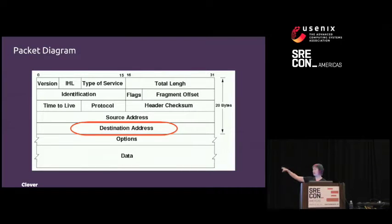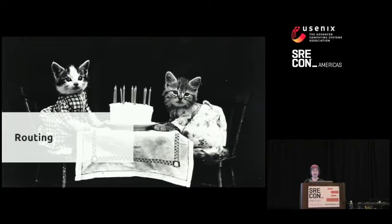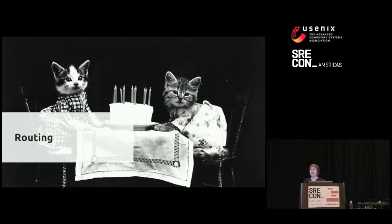So now your switch knows where you want to send it, but how does the data know how to send it? Switches know where to send packets using something we call routing tables. A routing table is just a very large lookup table where the switch looks up where to send the packet next in order to get to its destination. You may also have heard of the term routers. Historically, there were a lot of differences between switches and routers, but not anymore. Nowadays, the only real difference is that a switch is cheap and will have a small routing table, and a router is very expensive and has a large routing table.